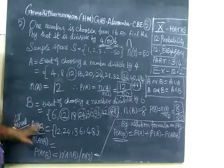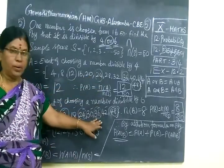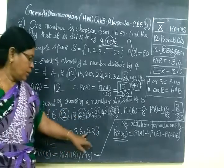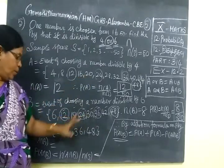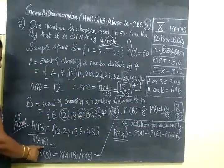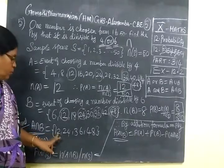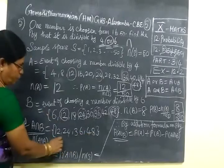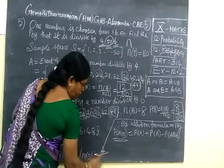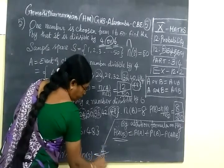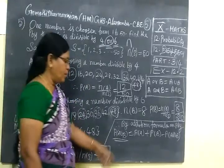So these numbers are common for the event A as well as the event B. 12, 24, 36, 48. They are there, 4 in A as well as in B. N of A intersection B, N means cardinal number. That means you are counting 1, 2, 3, 4. So 4. Therefore P of A intersection B, 4 by 50. Now using the addition formula.